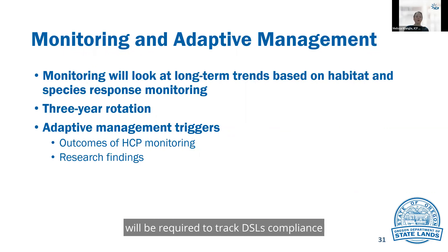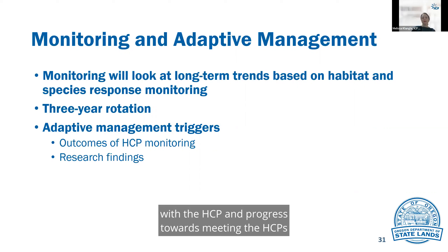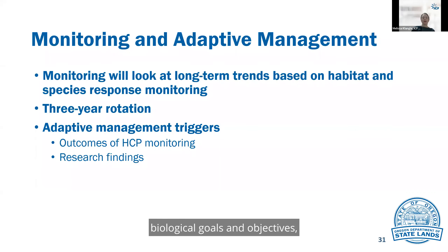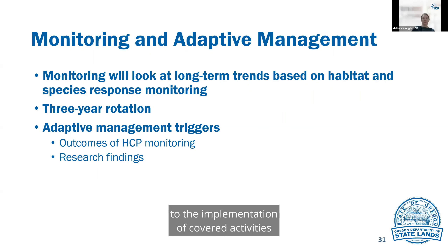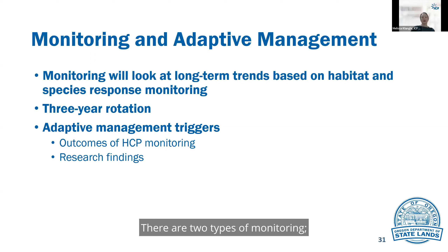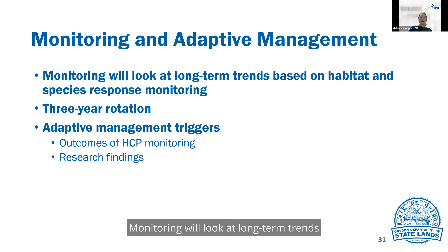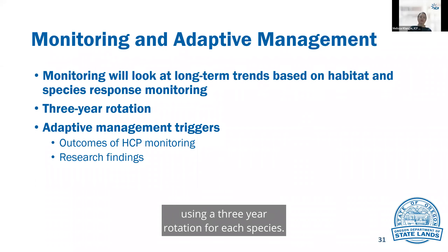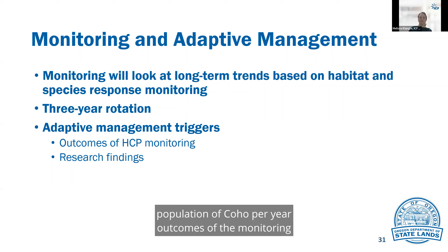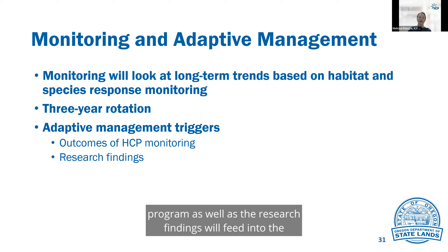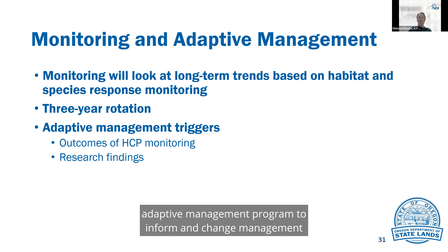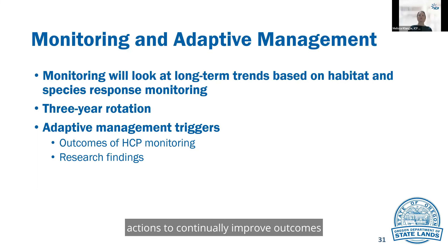A monitoring and adaptive management program will be required to track DSL's compliance with the HCP and progress towards meeting the HCP's biological goals and objectives, including the response of the covered species to the implementation of covered activities and conservation measures. There are two types of monitoring: compliance and effectiveness. Compliance monitoring documents that the requirements of the HCP and permit are being met, while effectiveness monitoring assesses the biological success of the HCP. Monitoring will look at long-term trends using a three-year rotation for each species, covering one third of the terrestrial species habitat in any given year and one independent population of coho per year. Outcomes of the monitoring program as well as the research findings will feed into the adaptive management program to inform and improve management actions and outcomes for the covered species.